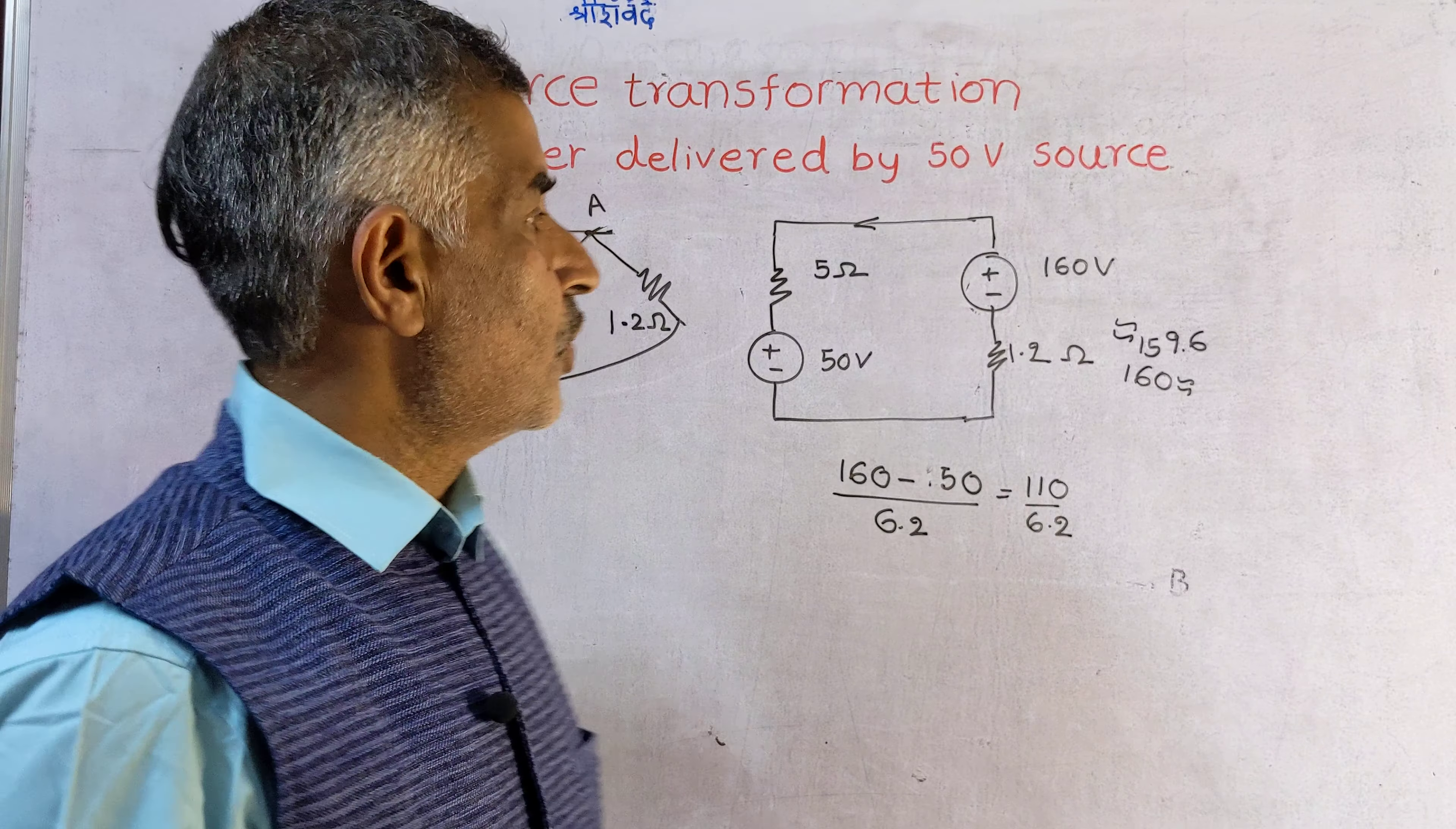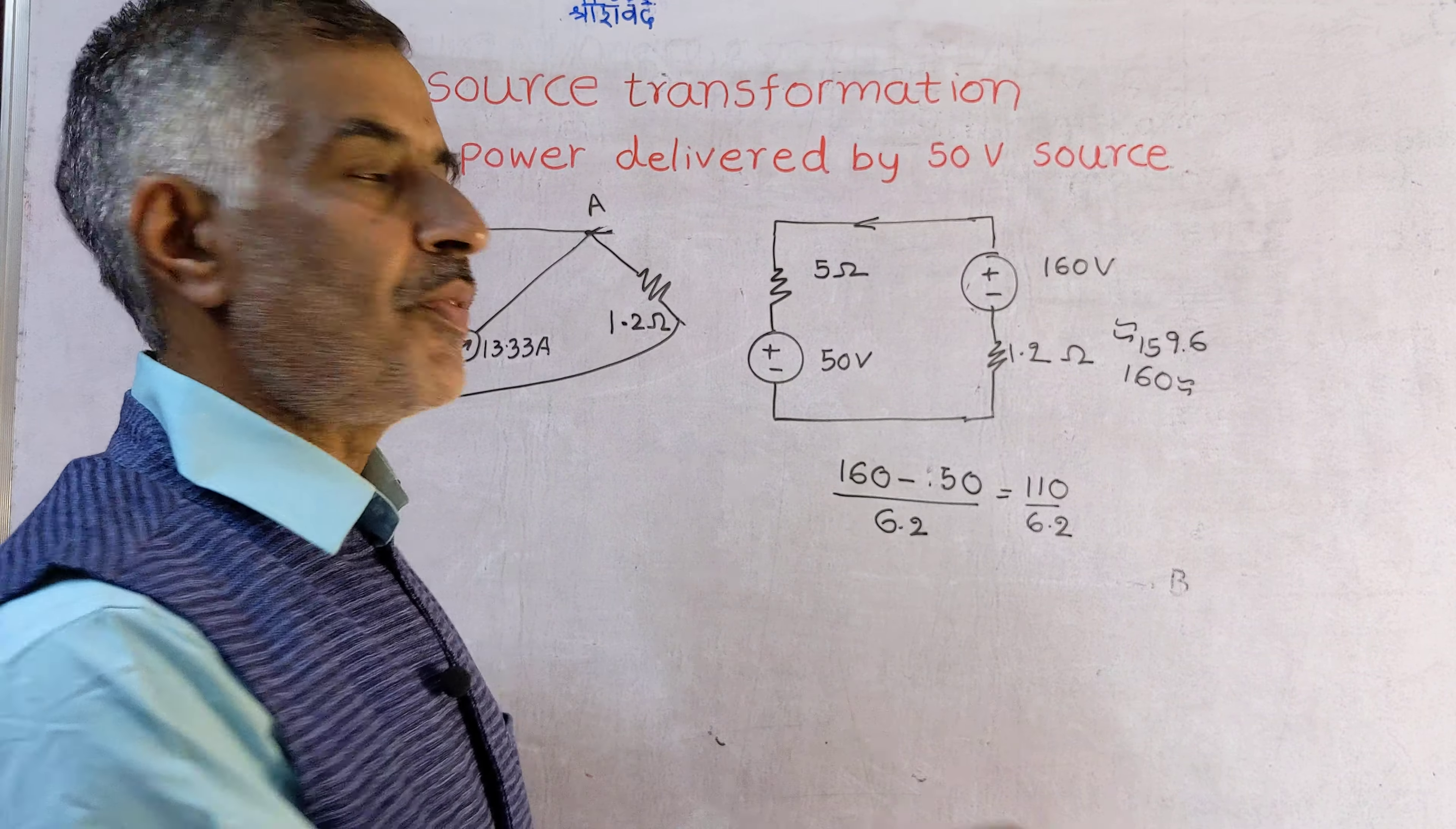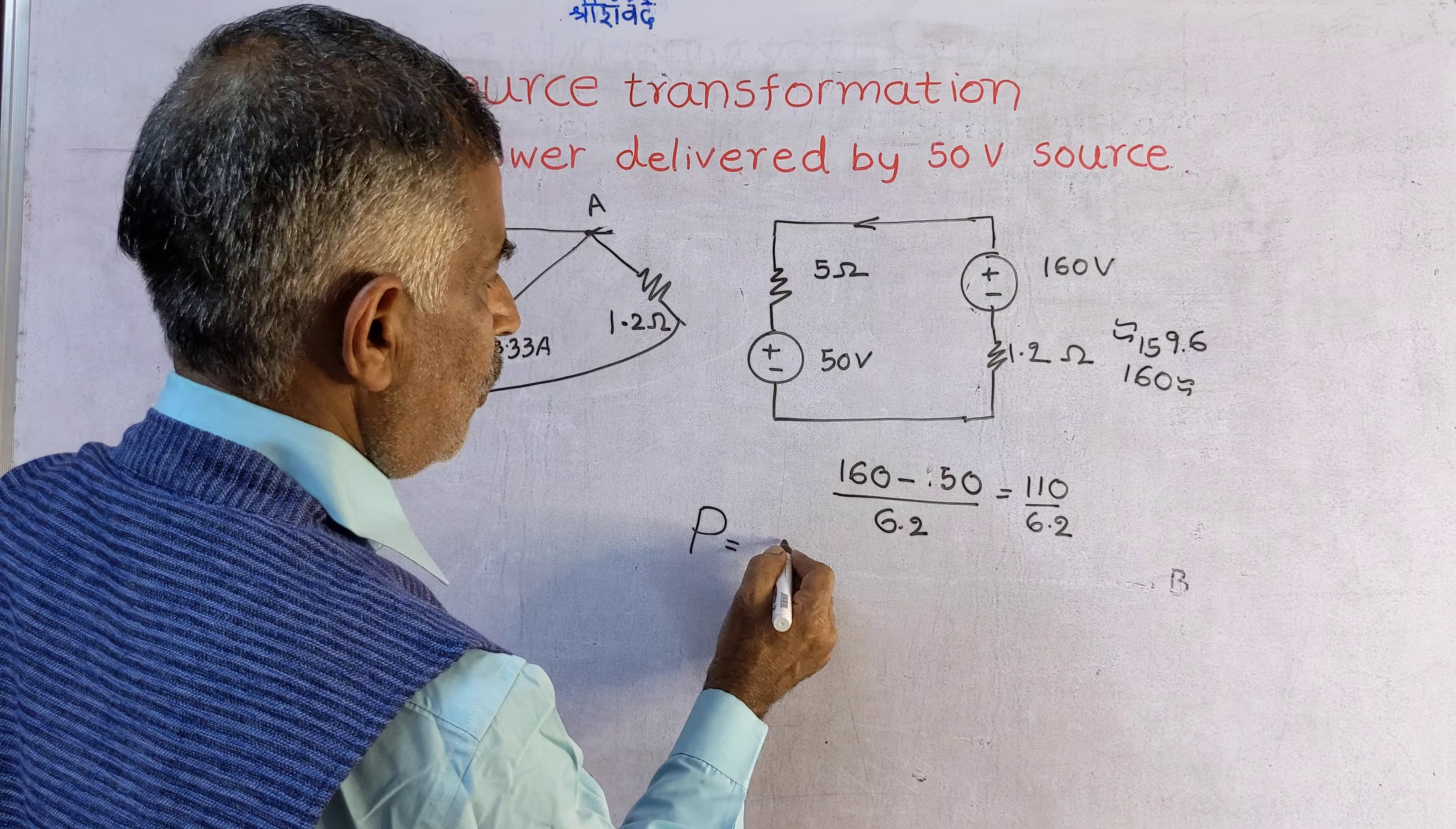Now 50 volt source is a weaker source compared with 160, therefore it is not going to deliver power but instead it is going to absorb the power. What is power absorbed by 50 volt source?